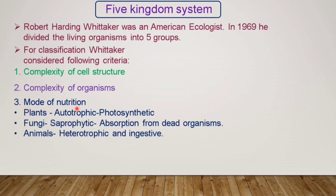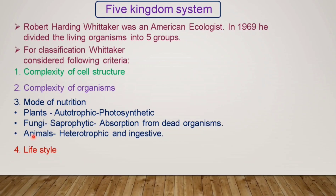The third criterion was mode of nutrition. Plants are autotrophic — they can produce their own food through photosynthesis. Fungi are saprophytic — they absorb nutrition from dead organisms. Animals are heterotrophic and ingestive, depending on other animals or plants for food. The fourth criterion is lifestyle. Plants are producers in an ecosystem, animals are consumers, and fungi are decomposers — they decompose organisms after they die.